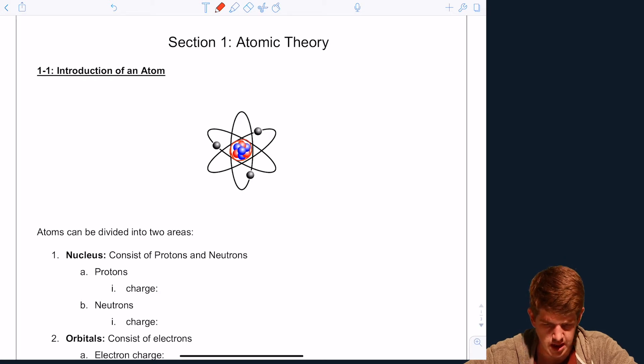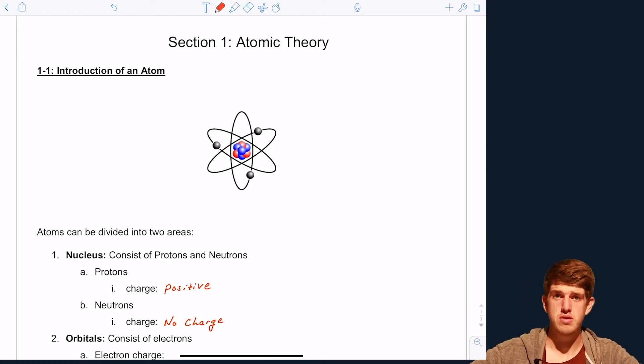So with the nucleus, the nucleus has two subatomic particles in it. It has protons, those protons have a positive charge, and it has neutrons which have no charge. So what does that mean? It means that overall the nucleus is positively charged. So that's all for the nucleus.